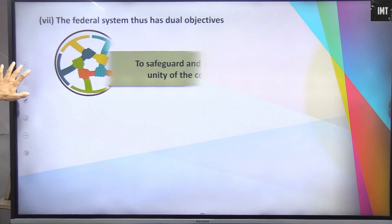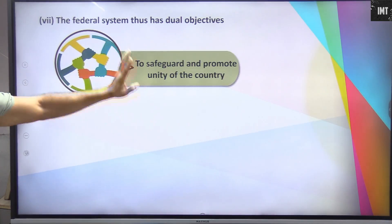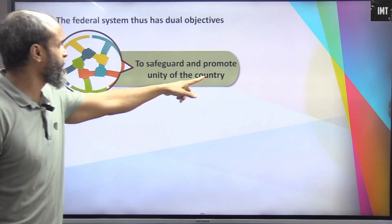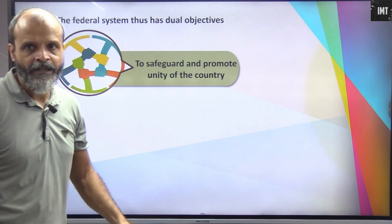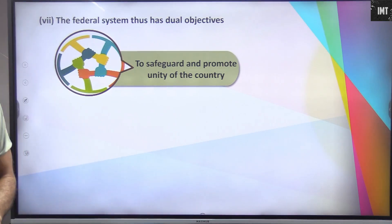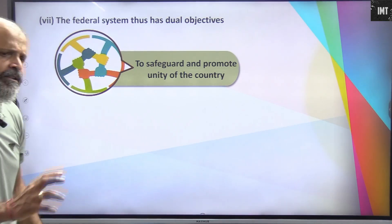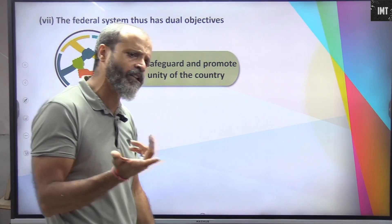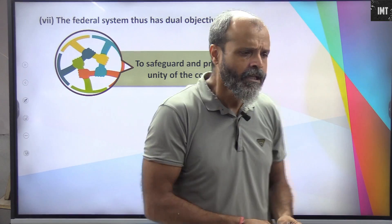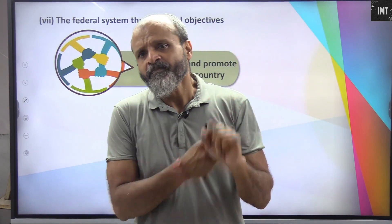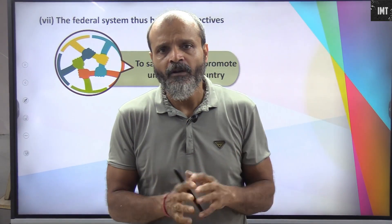The federal system has dual objectives: to safeguard and promote the unity of the country, and to accommodate regional diversity. How to promote the unity of the country? As long as people have shelter, food, and the comforts of life available, it doesn't matter much to them.